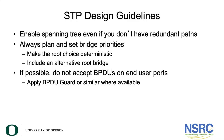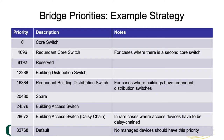Without spanning tree, the switch will not be able to detect that. Secondly, always plan and set bridge priorities. You should always be sure which bridge is going to be the root bridge — make that choice deterministic and try to include an alternative root bridge if you have the hardware. If possible, do not accept BPDUs on end user ports, because somebody could plug in a switch with a priority of zero and if it has a lower MAC address it could become the root bridge.